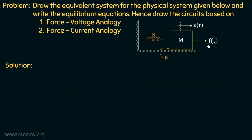If we observe this physical system, the applied force is F and the displacement is x. So we can say that there is only one displacement in this system, which is x. Moving on to step number 2, we have to identify the elements which have different displacements. In this case, we have three elements: the mass m, the spring having spring constant k, and the friction between mass m and the fixed surface represented by a dashpot. All three elements have the same displacement x.